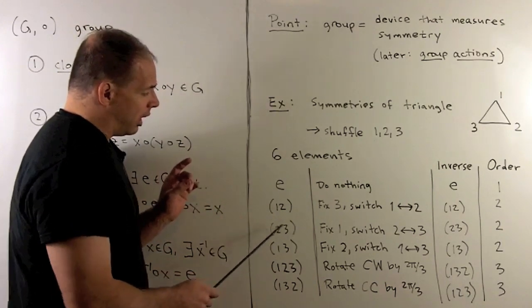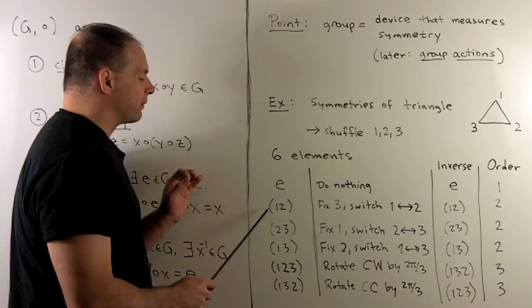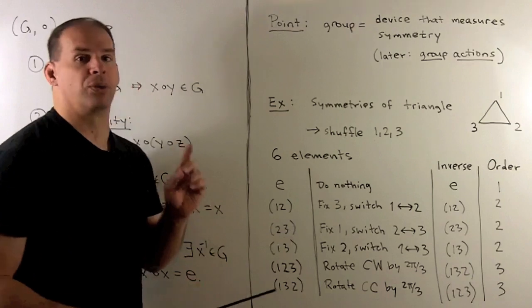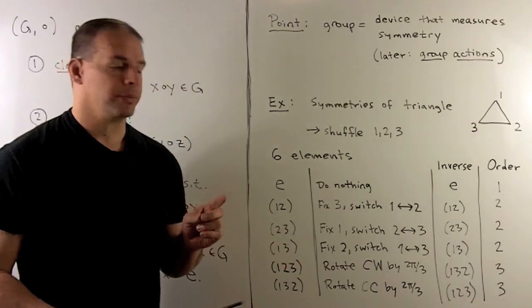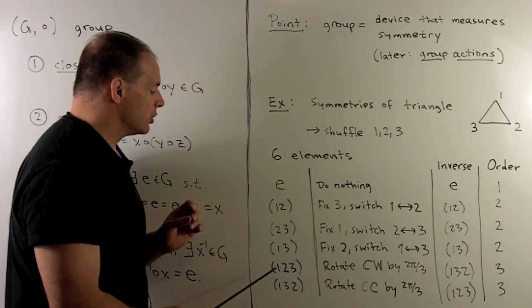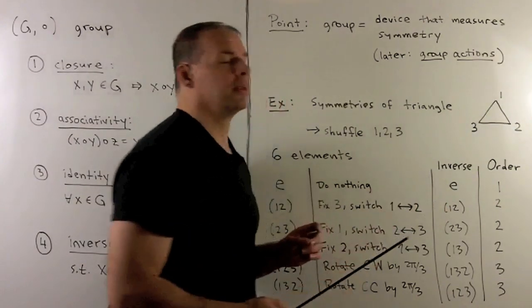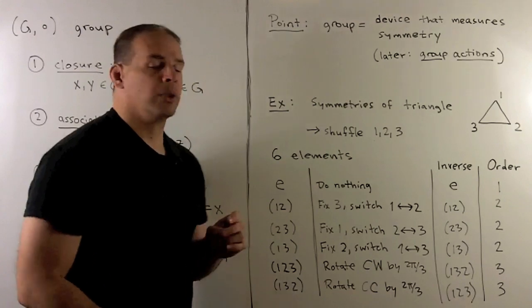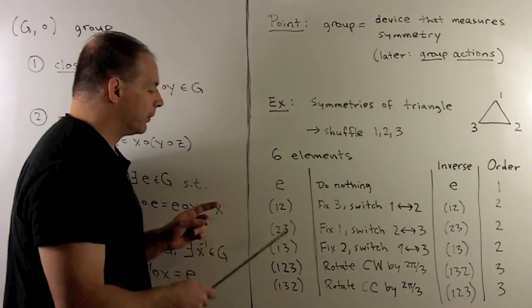Then, I'm going to write the remaining elements in cycle notation. This just says we go from left to right. When I get to the end, I come back to the front. Here we have 1 goes to 2, 2 goes to 1, and because 3 is not listed, we send 3 to itself. So 3 is fixed, and we switch 1 and 2. That's going to be a reflection. We'll have three reflections. Then, the remaining elements are going to be rotations. (1,2,3) is rotation clockwise by 2π/3, and (1,3,2) is rotation counterclockwise by 2π/3.